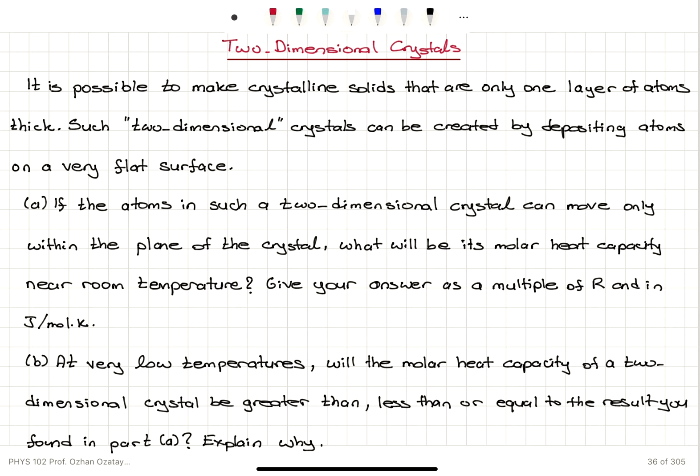In this problem, we've considered a two-dimensional crystal which can be formed by depositing atoms on a flat surface. Noting that they're restricted to move in the plane of the crystal, we want to know the molar heat capacity or molar specific heat at constant volume in terms of R, and we want to know what happens at very low temperatures.